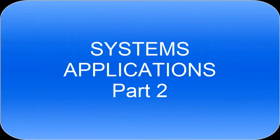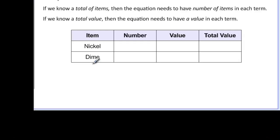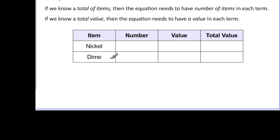This video is part two of systems applications. One very common problem is to talk about money. If I think about the difference between number of items and value of items, if I want to know the number of nickels, usually we don't know that when we start the problem, so I would call it n. If I wanted to know the value of a nickel, the value of a nickel is .05, five cents, and then the total value would be the five cents times the number of coins that we had that were nickels.